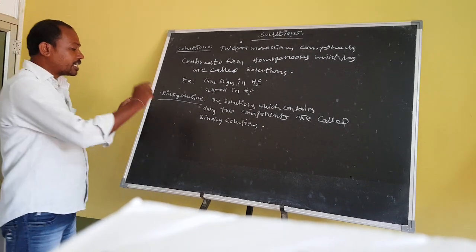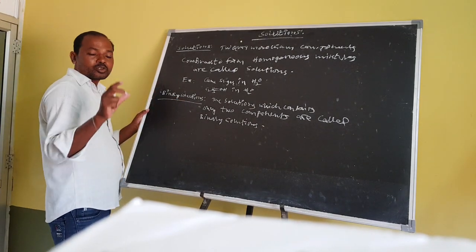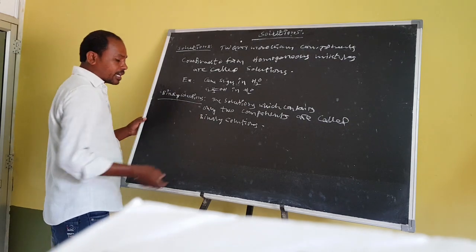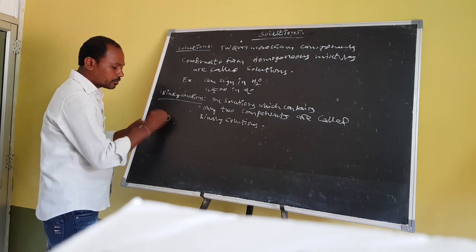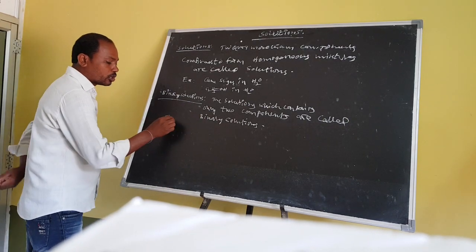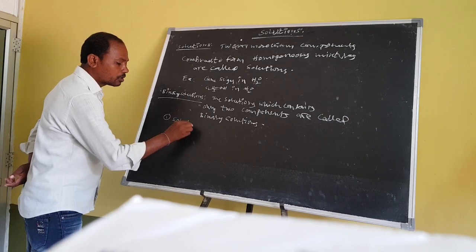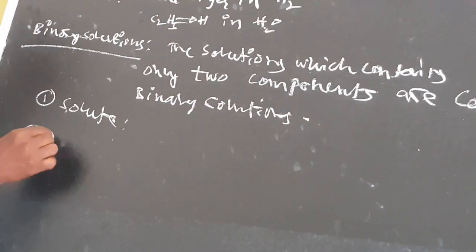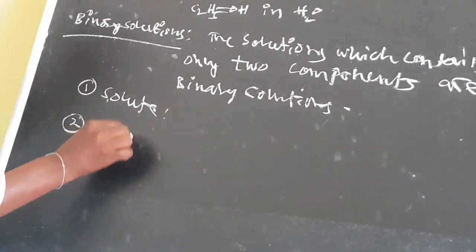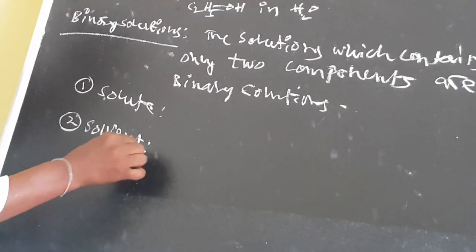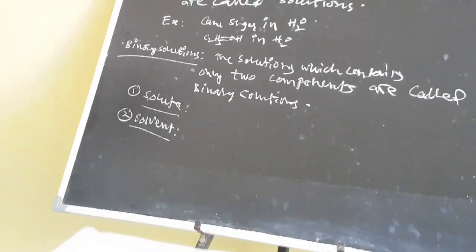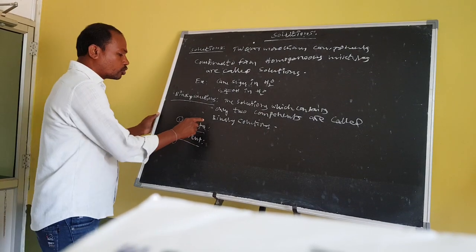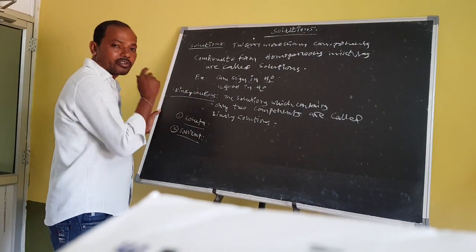Every binary solution contains two types of components. They are: number one, solute, and number two, solvent. The first one is solute and the second one is solvent.